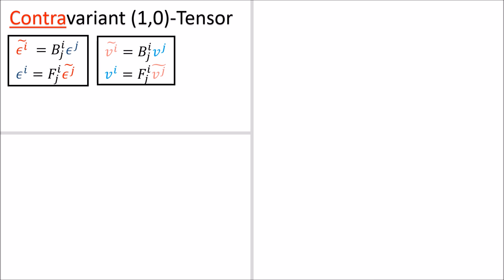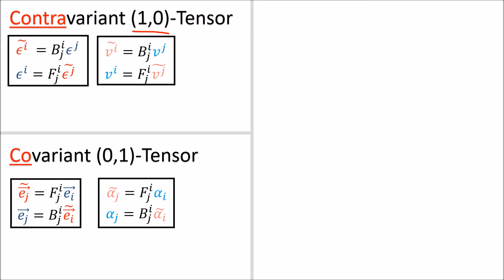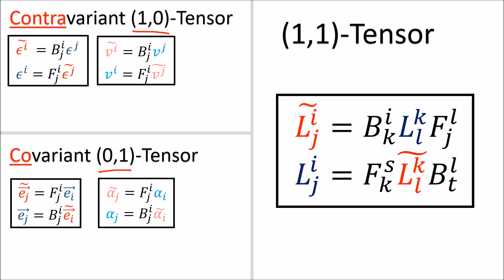To sum up everything: basis co-vectors and vector components transform using the contravariant law — we're calling these 1-0 tensors. Basis vectors and co-vector components transform using the covariant law — these are 0-1 tensors. And linear maps transform using both the forward and backward matrices, making them both contravariant and covariant — so we call them 1-1 tensors. That finishes up linear maps. In the next video we'll cover our final example of a tensor: the metric tensor.